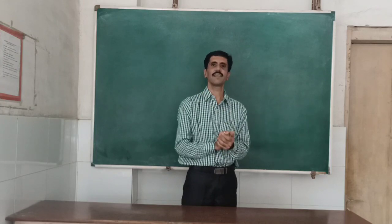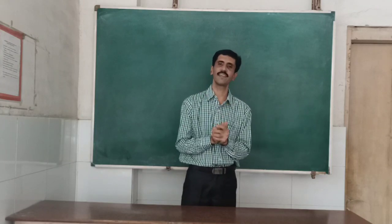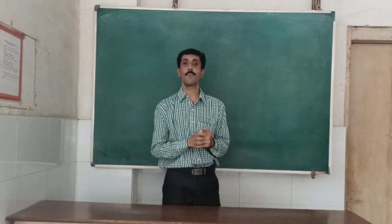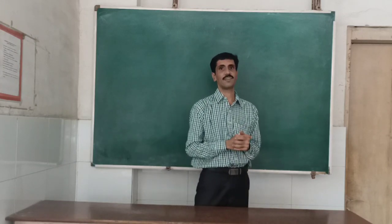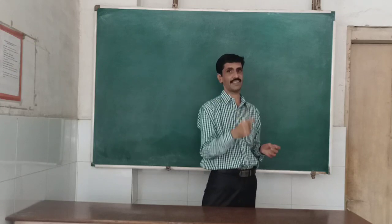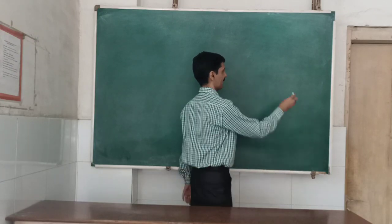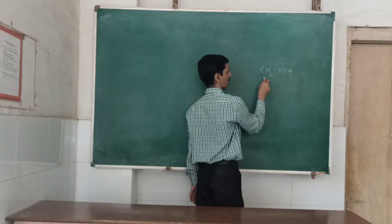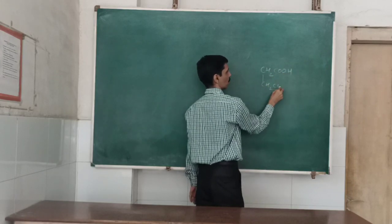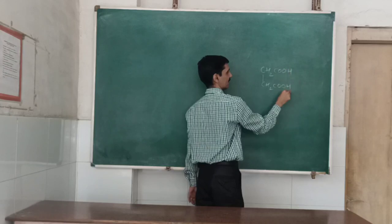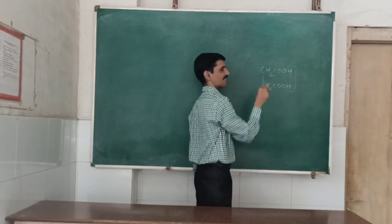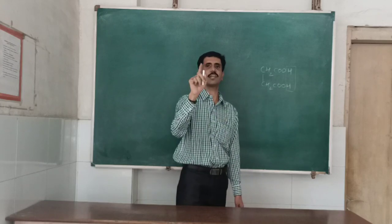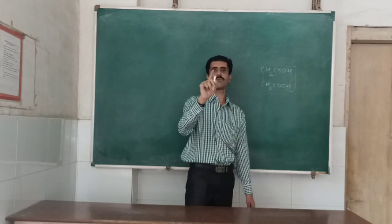Succinic acid has a molecular weight of 118 grams. But because it has two replaceable H+ ions — the formula is CH₂COOH, CH₂COOH — these are the two replaceable H+ ions. Therefore, when we consider its equivalent weight, it comes out to be 59.